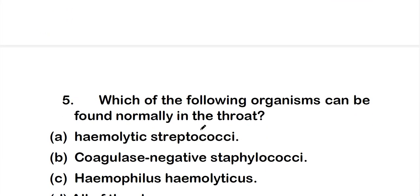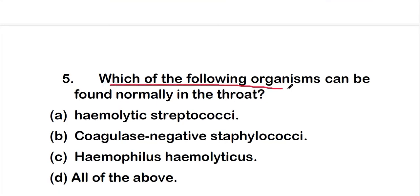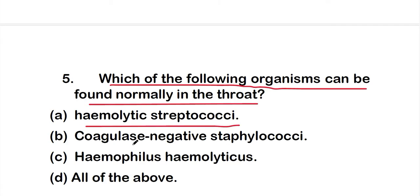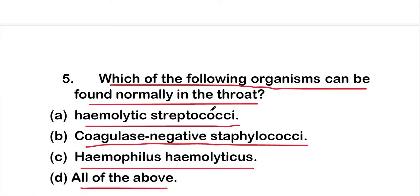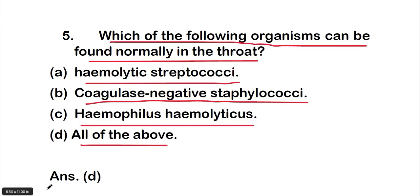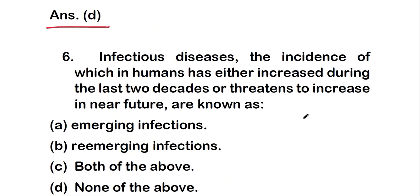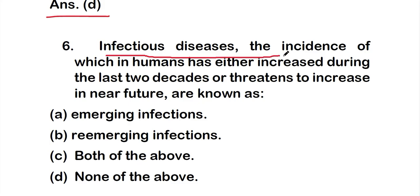Question 5: Which of the following organisms can be found normally in the throat? Options: option A: hemolytic Streptococcus; option B: coagulase-negative Staphylococcus; option C: Haemophilus haemolyticus; option D: all of the above. The right answer is option D — all of these organisms can be found normally in the throat.